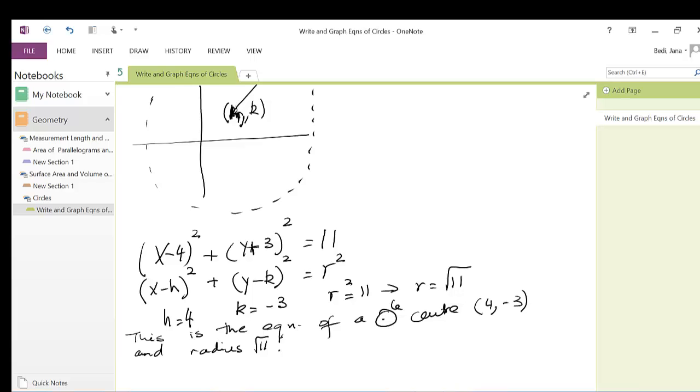And that is it for finding the equation of a circle given the center and the radius, or given an equation, then you go backwards. You find the center and the radius.